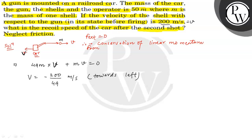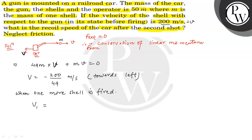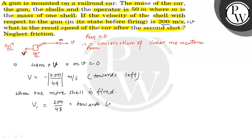V की value आई। When one more shell is fired, then जो V1 हो जाएगी, उसका magnitude: 200 divided by 48 रह जाएगा। और वो भी towards left direction में आएगा।